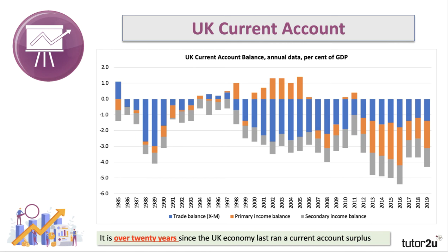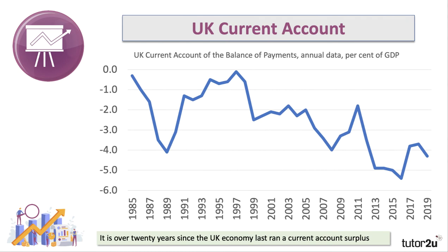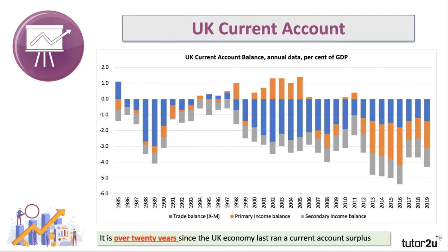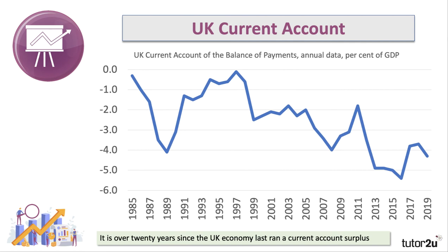Britain has been running quite significant current account deficits in excess of 3% of GDP in each of the last eight years. Plotting the figures as a line chart, you can see the UK's current account deficit as a percentage of GDP — capturing our external payments with the rest of the world across trade, primary income, and secondary income. The UK runs a persistent external deficit on the current account.